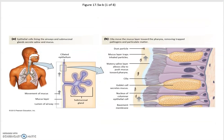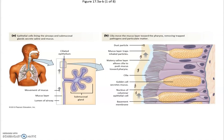The lining of the respiratory tract helps achieve this conditioning through what is called the ciliary escalator. The respiratory epithelium has cilia — hair-like extensions on the cells — and goblet cells that produce mucus. Dust particles are trapped in the mucus and transported upward by the cilia so you can cough them out.